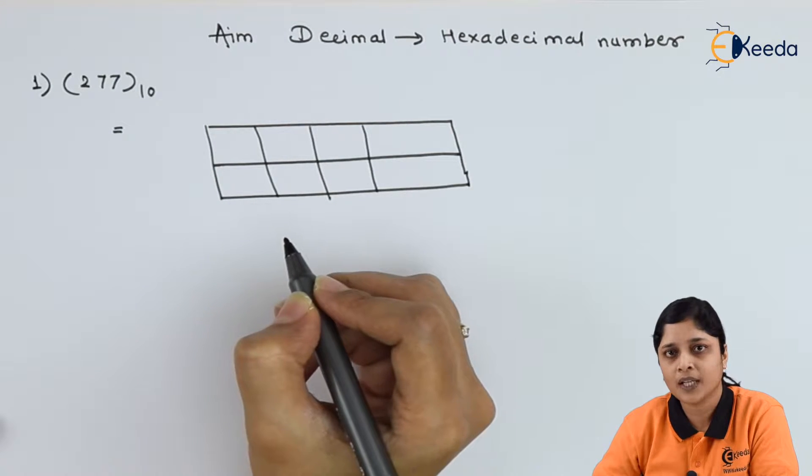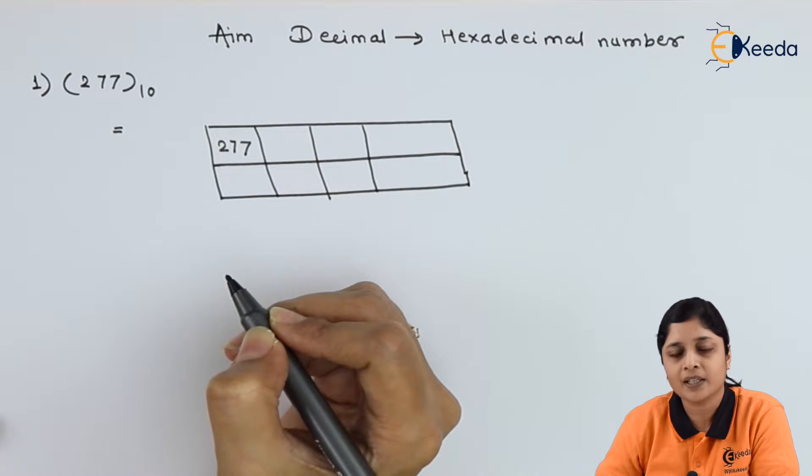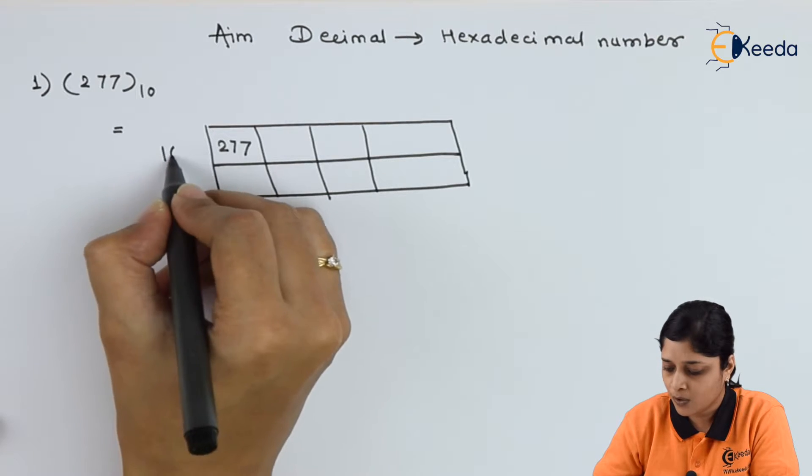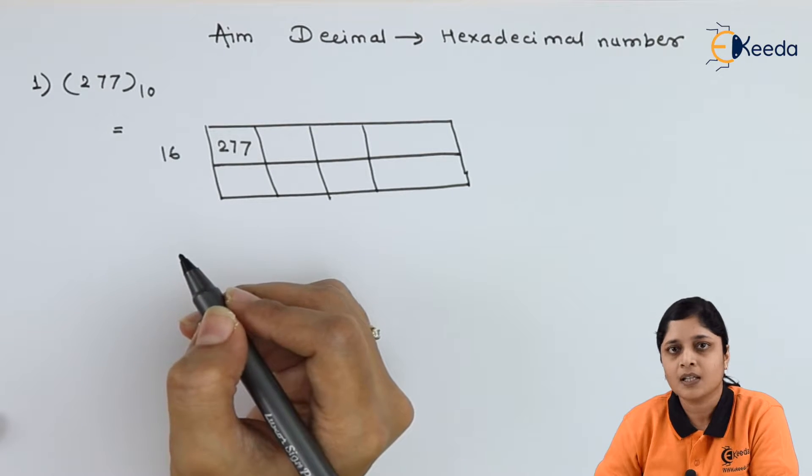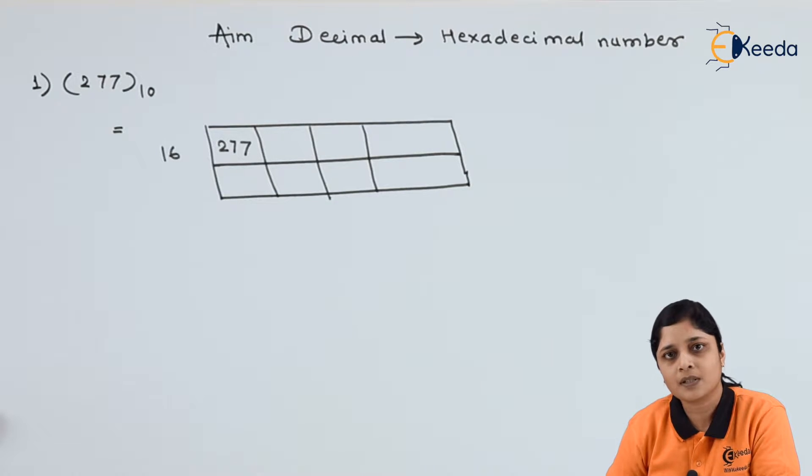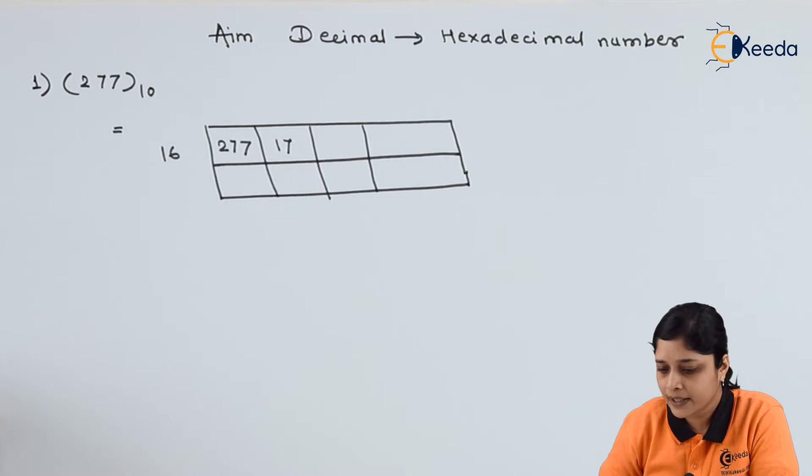For that, you have to draw one table. Write down 277 here and divide by 16, because your aim is to get the answer in hexadecimal number. The base of hexadecimal number system is 16. So if you take 17 into 16, you will get 272.